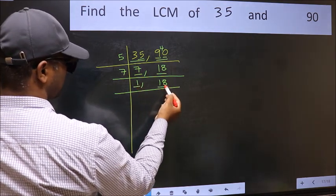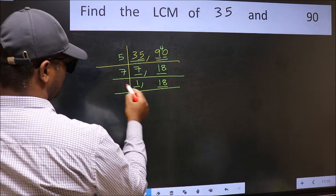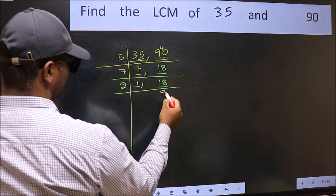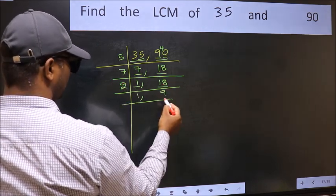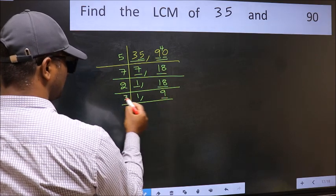So focus on the next number 18. 18 is 2 times 9. Now here we have 9. 9 is 3 times 3.